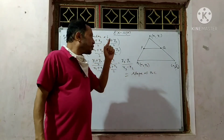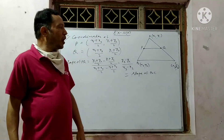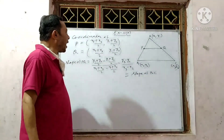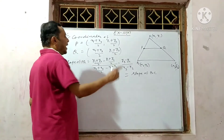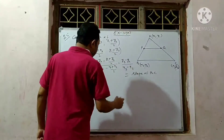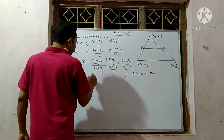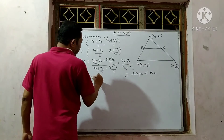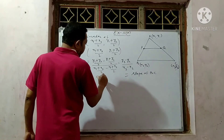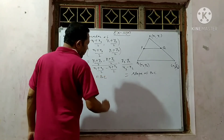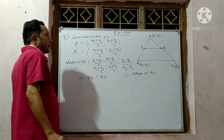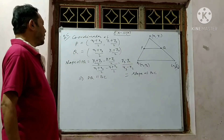The slope of BC, as seen in the figure, is (y₃ − y₂)/(x₃ − x₂). Since the slope of PQ equals the slope of BC, and if the slopes of two lines are equal they are parallel, this implies PQ is parallel to BC.